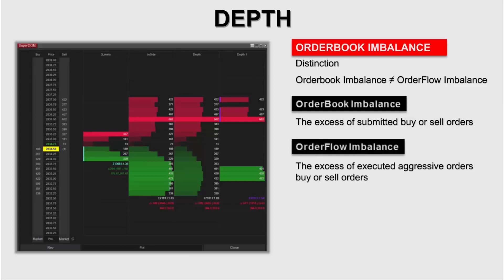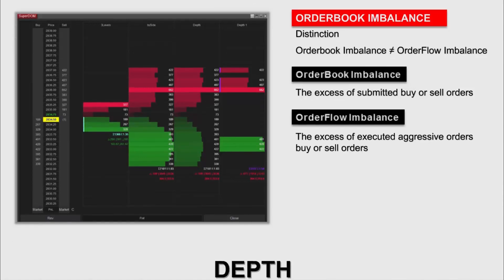On the other hand, order flow imbalance regards the executed orders that take place in the market. Order book imbalance is very important as a descriptor that allows us to understand the general sentiment of the market.